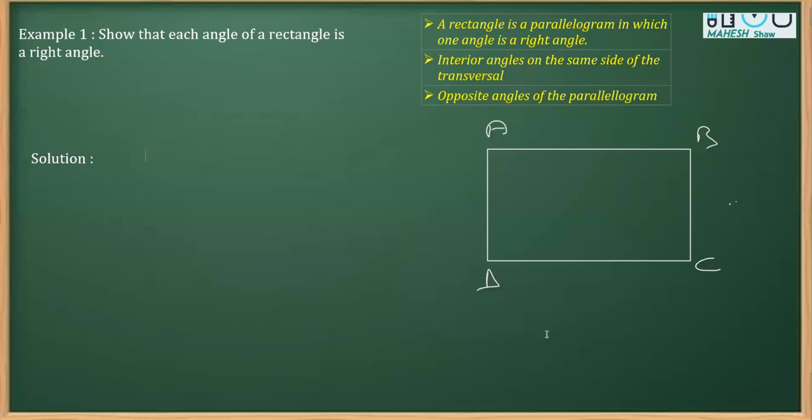As I said, a rectangle is a parallelogram in which one angle is 90 degree. So, let's say ABCD is a rectangle in which I have to take one angle as 90 degree. So, I've taken angle A as 90 degree.